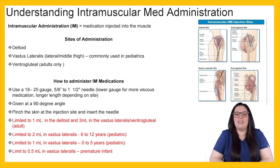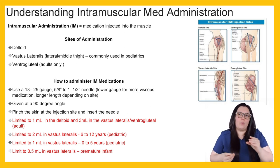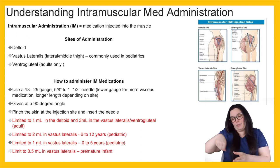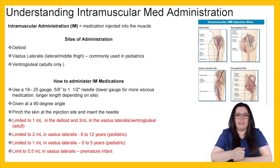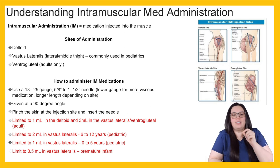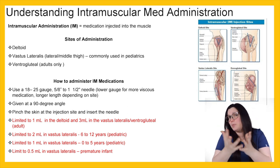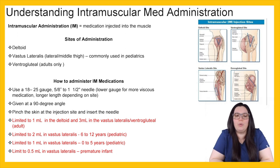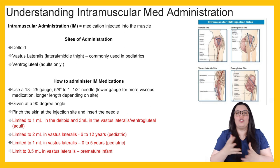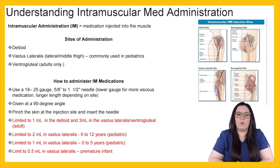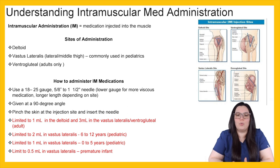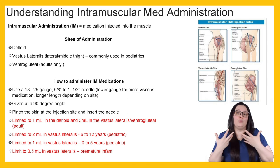IM injections are given at a 90-degree angle — straight down into the muscle, not at a different angle like sub-Q. You want to pinch the skin at the injection site and then insert the needle. An important consideration is that volume is limited depending on the site. If you're giving it into the deltoid muscle, you're only able to give 1 ml, and 3 mls into the vastus lateralis or ventrogluteal when it comes to adults.